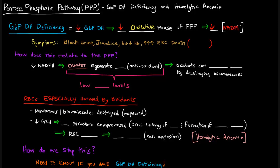Some of the symptoms of this deficiency are black urine, jaundice, really low levels of hemoglobin, and really high levels of red blood cell death via hemolysis.